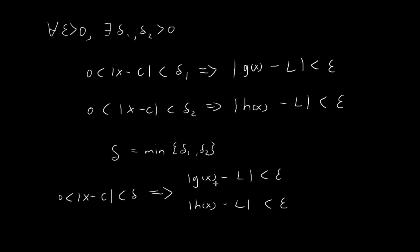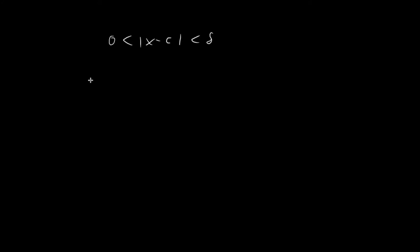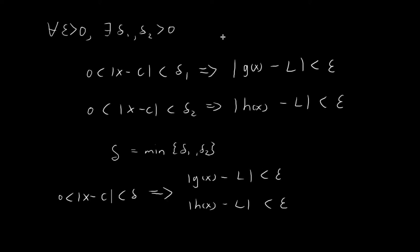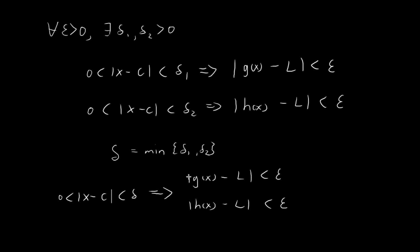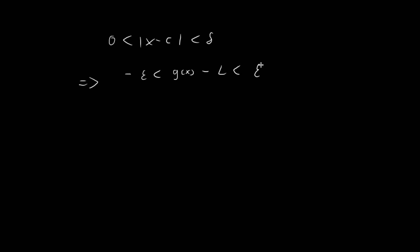So now we know that when |x − c| < δ, these two statements are immediately true. I'm going to rewrite them in a slightly different way — instead of using an absolute value, I'm going to express |g(x) − L| < ε as g(x) − L being between −ε and ε. This is just a different way of expressing the same statement. And the same goes for h of x, so h(x) − L is also between −ε and +ε.